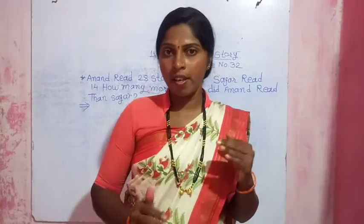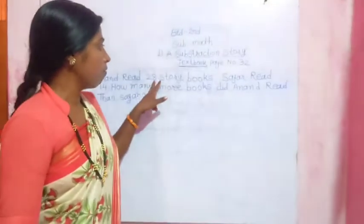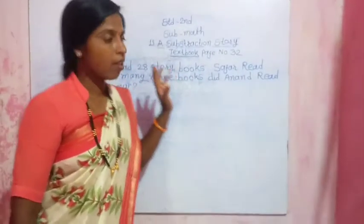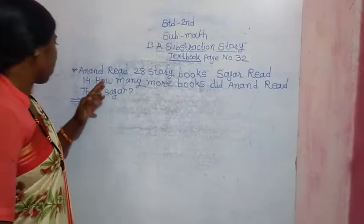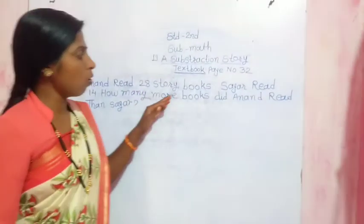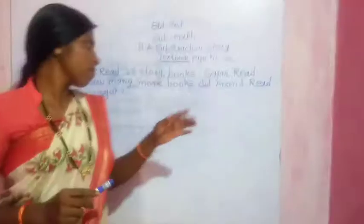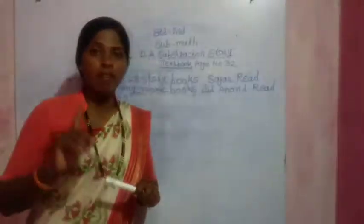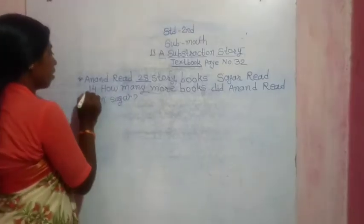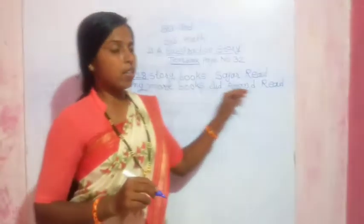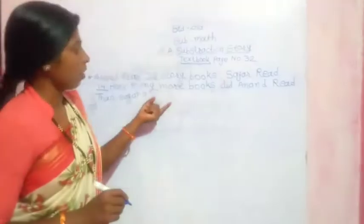First, I read the example. Anand read 28 story books. Sagar read 14. How many more books did Anand read than Sagar? This means that Anand has 28 story books and Sagar has read 14 books. How many more books did Anand read?